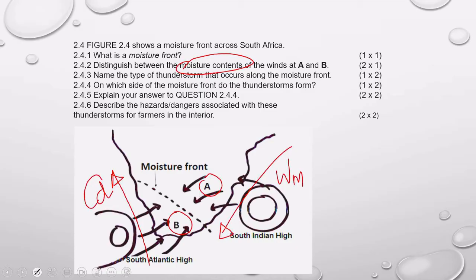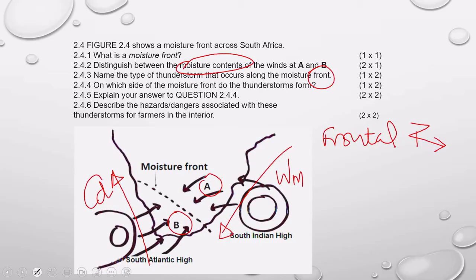Question 2.4.3: Name the type of thunderstorm that occurs along the moisture front. The giveaway is right there — 'front' — so that is a frontal thunderstorm. Always make sure you use full words: frontal thunderstorm. Question 2.4.4: On which side of the moisture front do the storms form? We have tackled that one. Remember, the eastern side has got warm, moist air, so it will be on the eastern side of the front that you will get the thunderstorms.